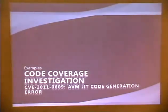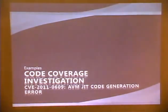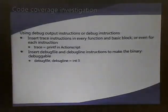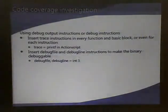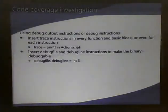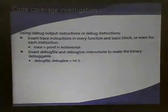The first example is CVE-2011-0609, which was very, very popular last year — one of the most abused vulnerabilities from Flash files. Using this example, I will show how we can use AVM instrumentation to trace how the code is executed. With this example I use the trace API from ActionScript, which is a simple debugging API. If you use the trace API and put some format-related strings, you can print out debugging messages to a debugging file. You can also use debug file or debug line instructions from AVM, similar to the INT3 instruction in x86.